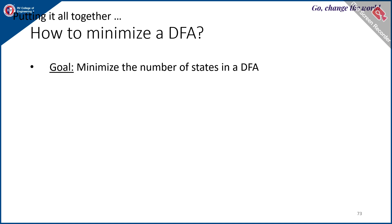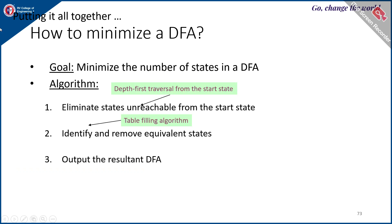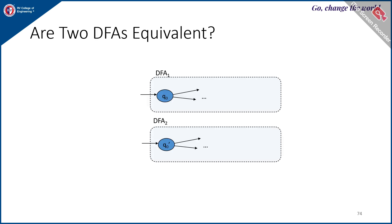Putting it all together, the minimization of the DFA works as follows: first, eliminate states unreachable from the start state; then use the table filling algorithm to identify equivalent states and remove one from each pair; finally, output the resultant minimized DFA. This is the complete procedure for minimization of states in a DFA.